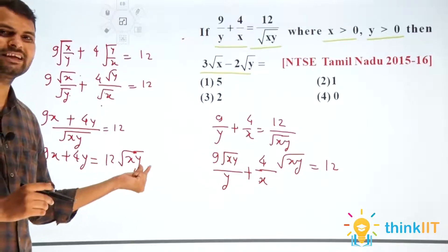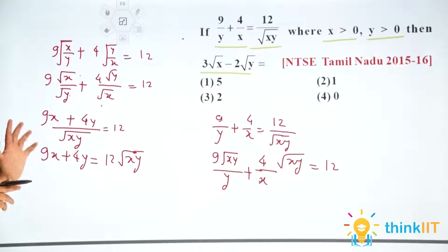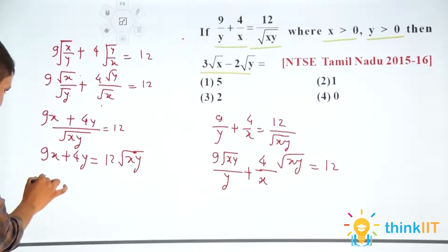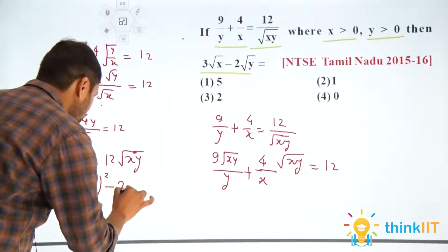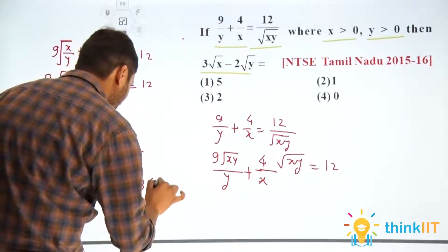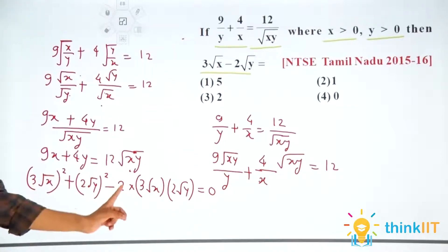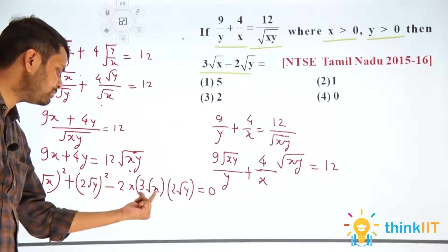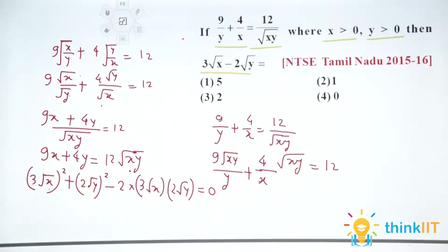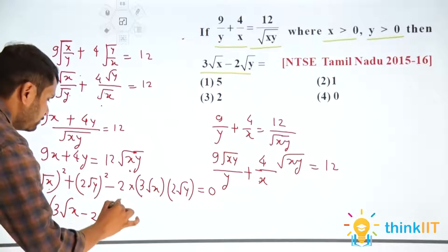In this question we have root x and root y as two quantities. Now look carefully: 9 is the square of 3, and 4 is the square of 2. So we can think about an a plus b or a minus b whole square. I can write this as 3 root x whole square plus 2 root y whole square minus 2 times of 3 root x times 2 root y is equal to 0, after shifting the 12 root xy term. This is a² + b² − 2ab where a is 3 root x and b is 2 root y.